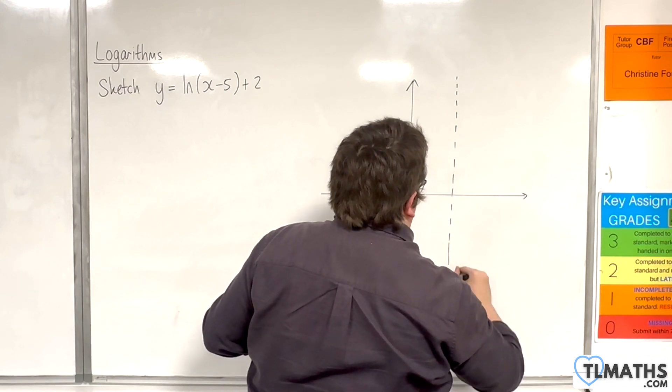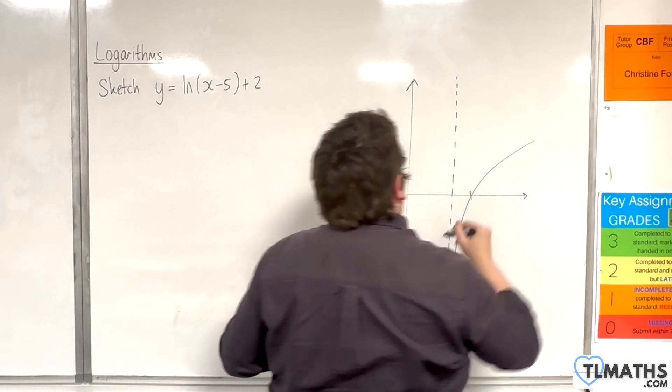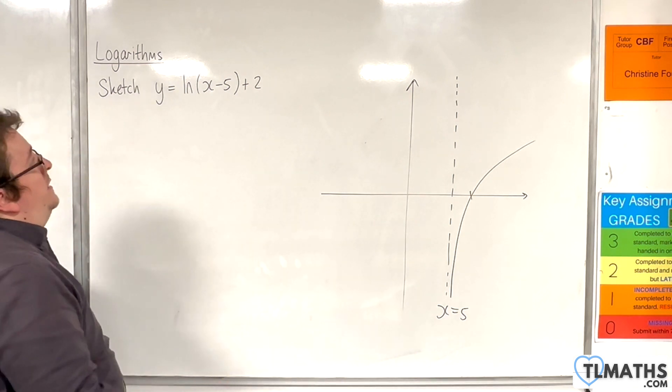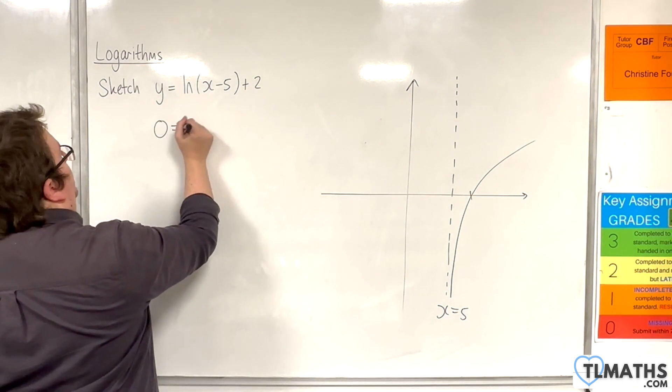Then we're going to have our traditional log curve, and we're interested in where it crosses the x-axis. Now that's when y is going to be equal to 0.